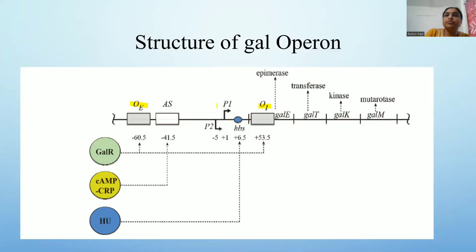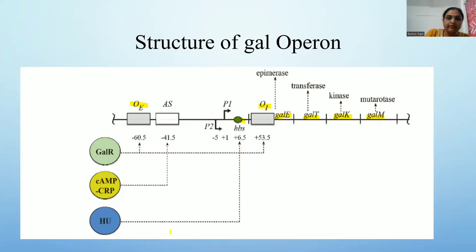There are two promoters, P1 and P2. There are four structural genes: GAL-E (encoding epimerase), GAL-T (transferase), GAL-K (kinase), and GAL-M (mutarotase). There is also an HBS site, which allows binding of the HU protein — a DNA architectural protein in bacterial cells that enables bending of the DNA.